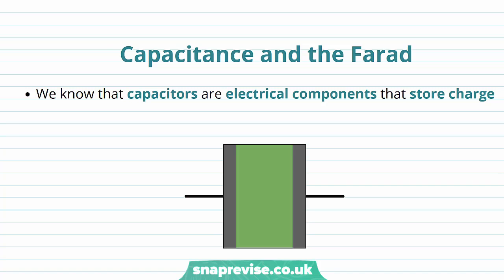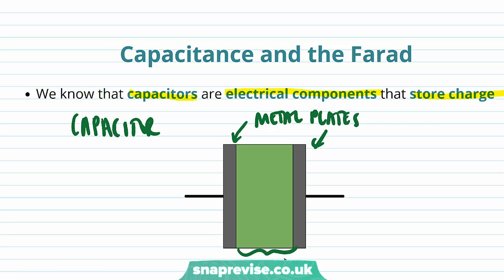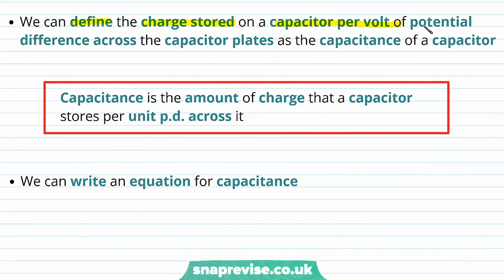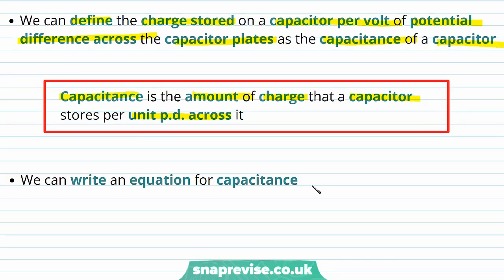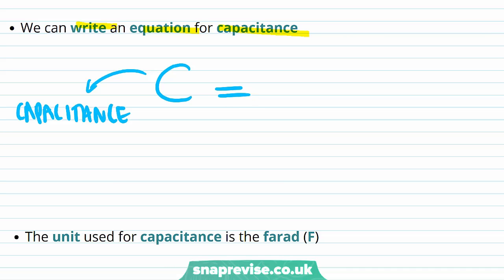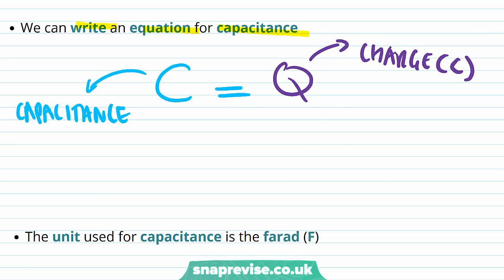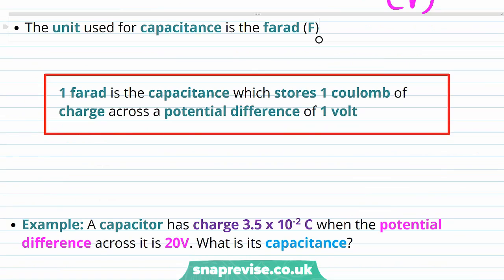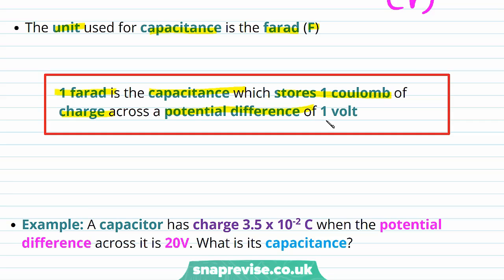We're now going to define a quantity called capacitance and its unit, the farad. Capacitors are electrical components that can store charge — two metal plates separated by an insulator. Capacitance is the amount of charge that a capacitor stores per unit of potential difference across it. The equation is: capacitance C equals charge Q in coulombs divided by voltage V in volts. One farad is the capacitance which stores one coulomb of charge across a potential difference of one volt.